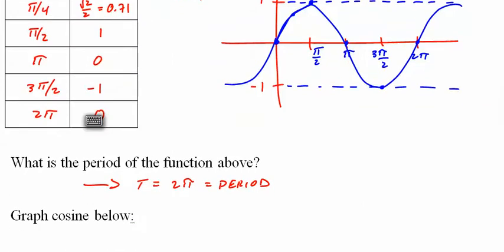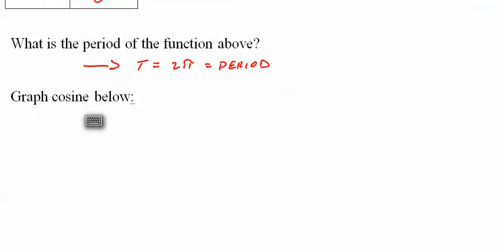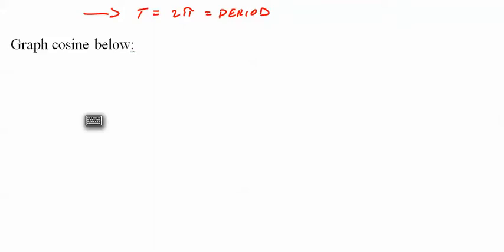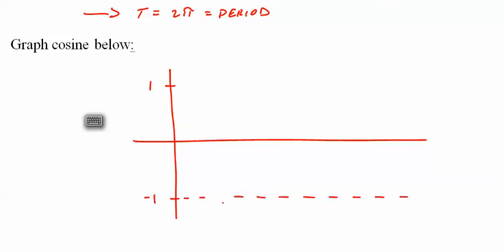Same process for cosine. Goes up to one, goes down to negative one. Dot them in. Put your four tick marks. Label them. 2π is the period. Half that is π, half that again is π/2, then 3π/2. Cosine starts at one, heads down until it gets to negative one at π, and then it heads back up.